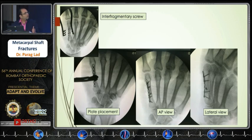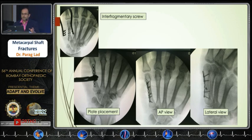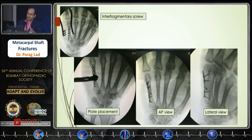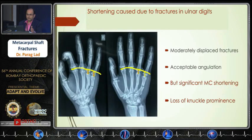The technique to fix these — apart from the bouquet technique — is to first stabilize the short or long spiral oblique fracture with an interfragmentary screw, then put a neutralization plate. This is how the X-ray looks. They usually have no union complications and unite well in time, and you can start mobilization in three weeks.